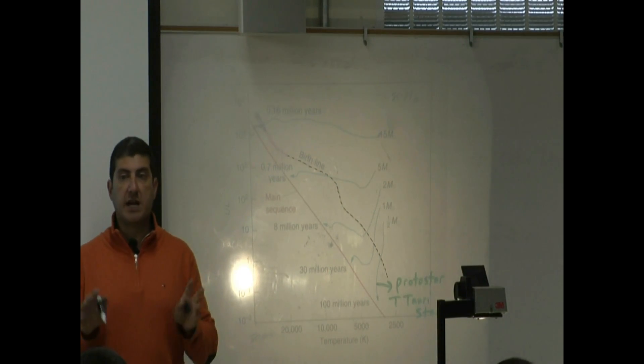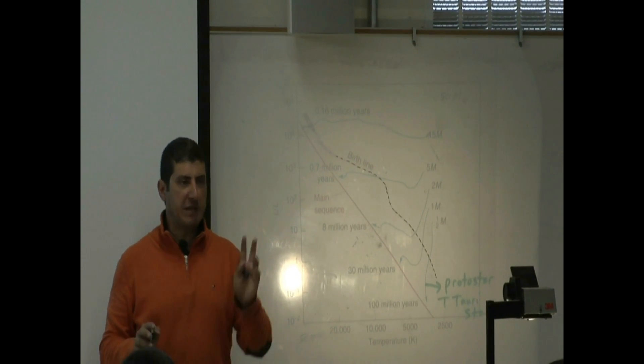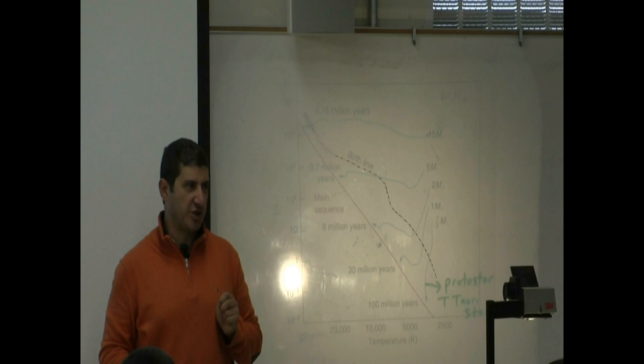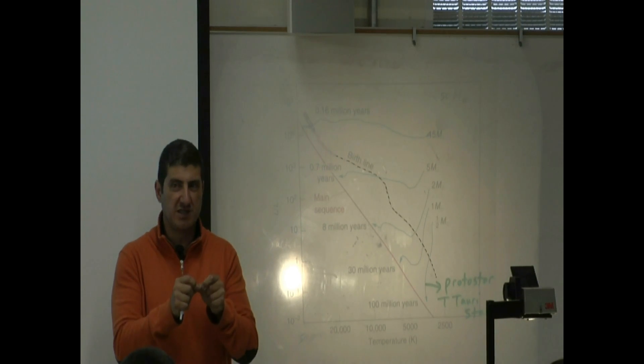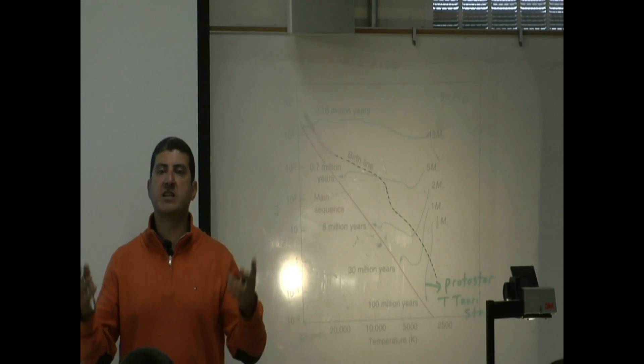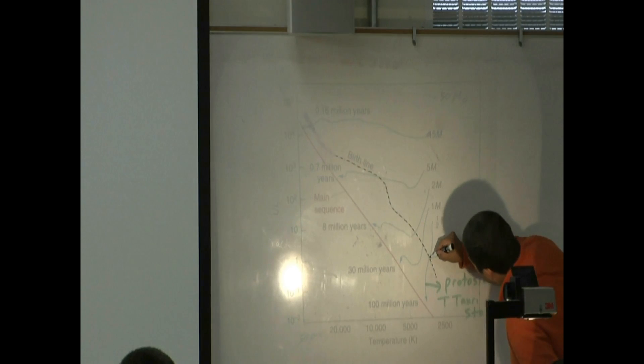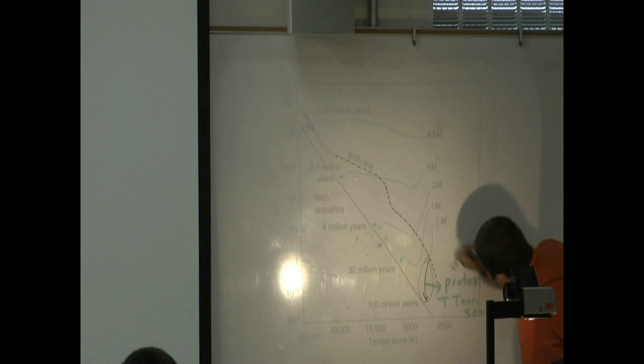That dotted line represents the birth line. Once the protostar has passed the birth line, it is now doing the PP chain, proton-proton chain. It is fusing hydrogen into helium, forming energy. It has now become a protostar. So once it crosses the birth line, during this stage, it's called a protostar. Another name for it is T-Tauri star.